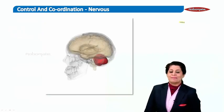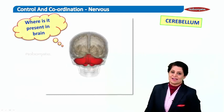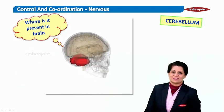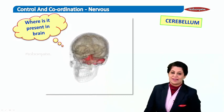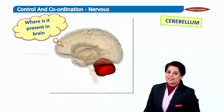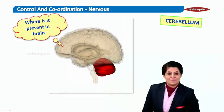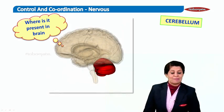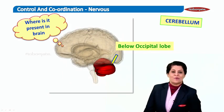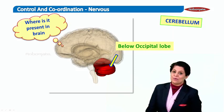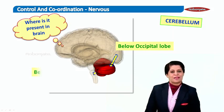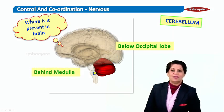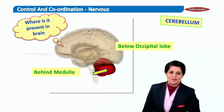Now the cerebellum is this structure. So where is it present in your brain? This is the side view of the brain. The cerebellum is present right below the occipital lobe, or you can also say it's present behind the medulla.